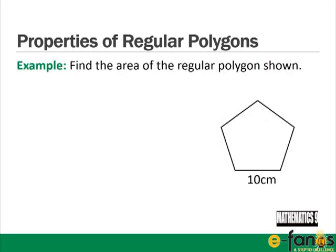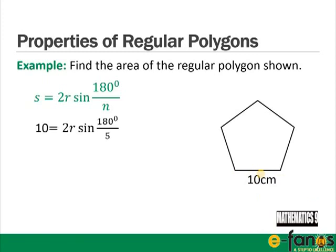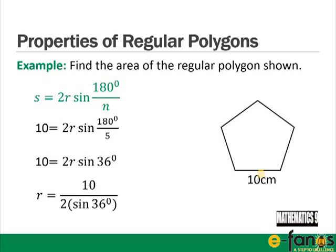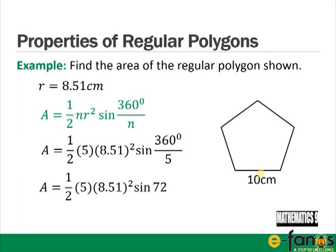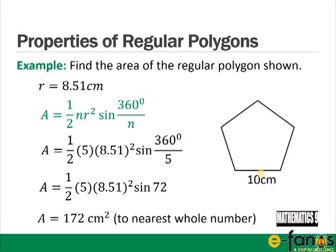Example: find the area of a regular pentagon with side length 10. First find R: S = 2R sin(180/n), so 10 = 2R sin(36°), giving R = 10 / (2 sin 36°) = 8.51 cm. Then area = ½ × n × R² × sin(360/n) = ½ × 5 × 8.51² × sin(72°) = 172 cm² to the nearest whole number.